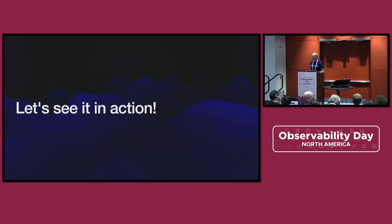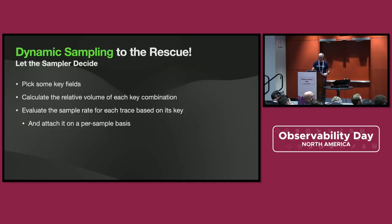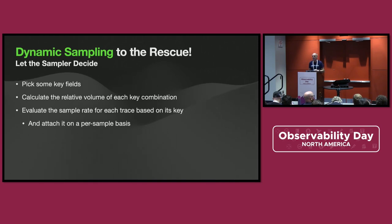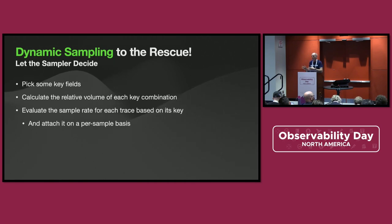You attach those fields to your traces, then use that combination of fields to determine a unique key for everybody, and evaluate sample rates based on that key. We take these keys and collect and watch how many happen. We calculate which things are most common and which are least common. We make sure we keep all of the least common ones, but the most common ones we can fairly heavily reduce. So you end up keeping one in 100 of your 200s to the login service, but keeping everything from some other service that's crashing with 500s.